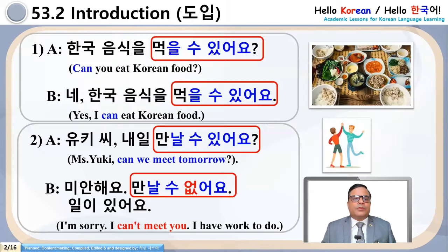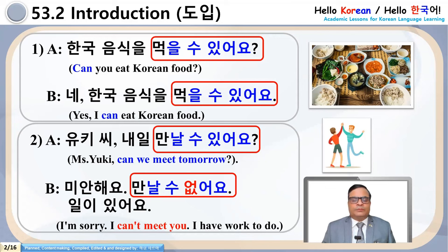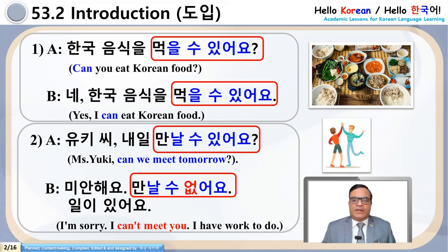Let's move to the next point. See this sentence. Number one, A: Hanguk Umshigal Mogalsu Issayo. Answer: Hanguk Umshigal Mogalsu Issayo. In this first example, Mogalsu Issayo means 'can eat' in English. Can you eat Korean food? In Mogalsu Issayo, we have used the grammar Ulsu Itta or Ulsu Akta.